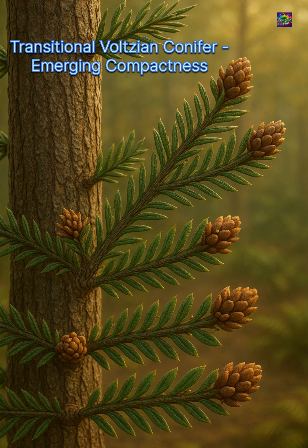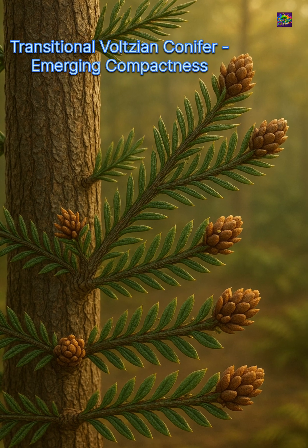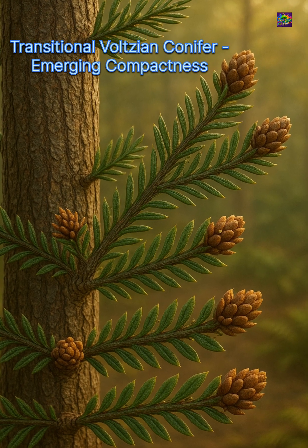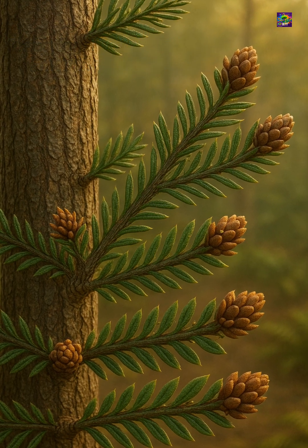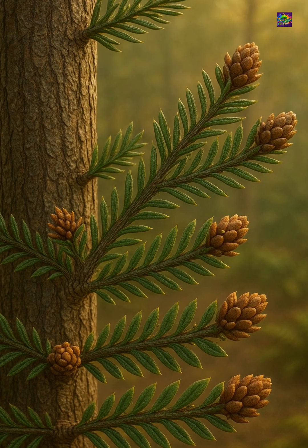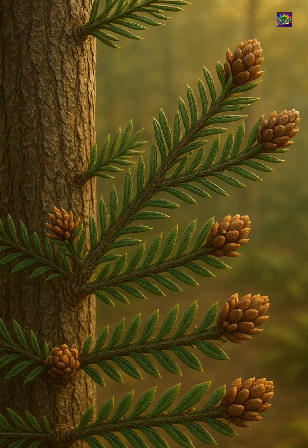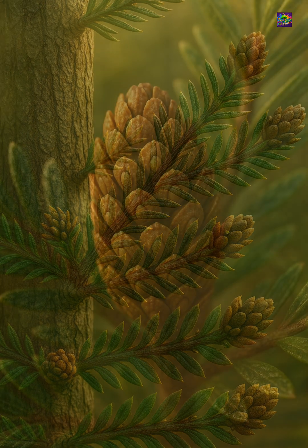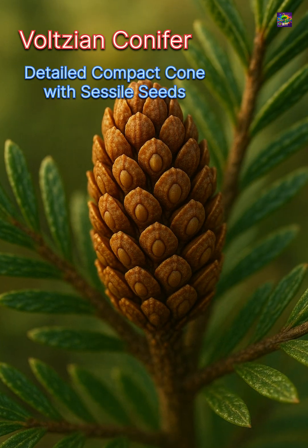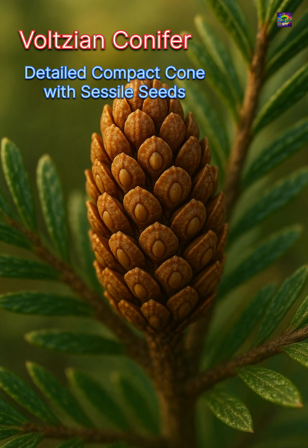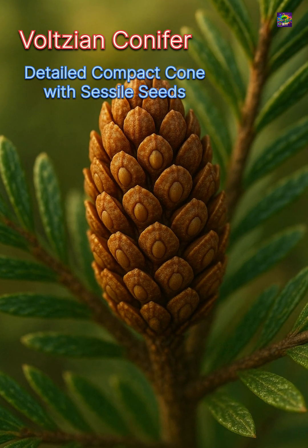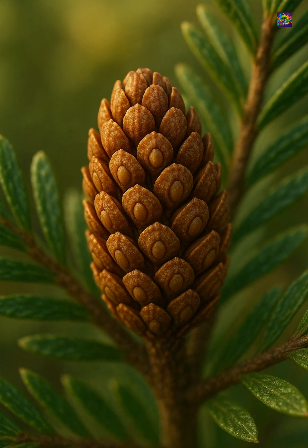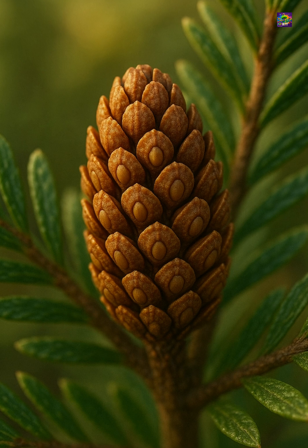During the late Permian, a major structural shift emerged within the group, producing the more advanced Woltzian conifers. In these plants, the radial shoot system was replaced by flattened fertile scales bearing sessile seeds,